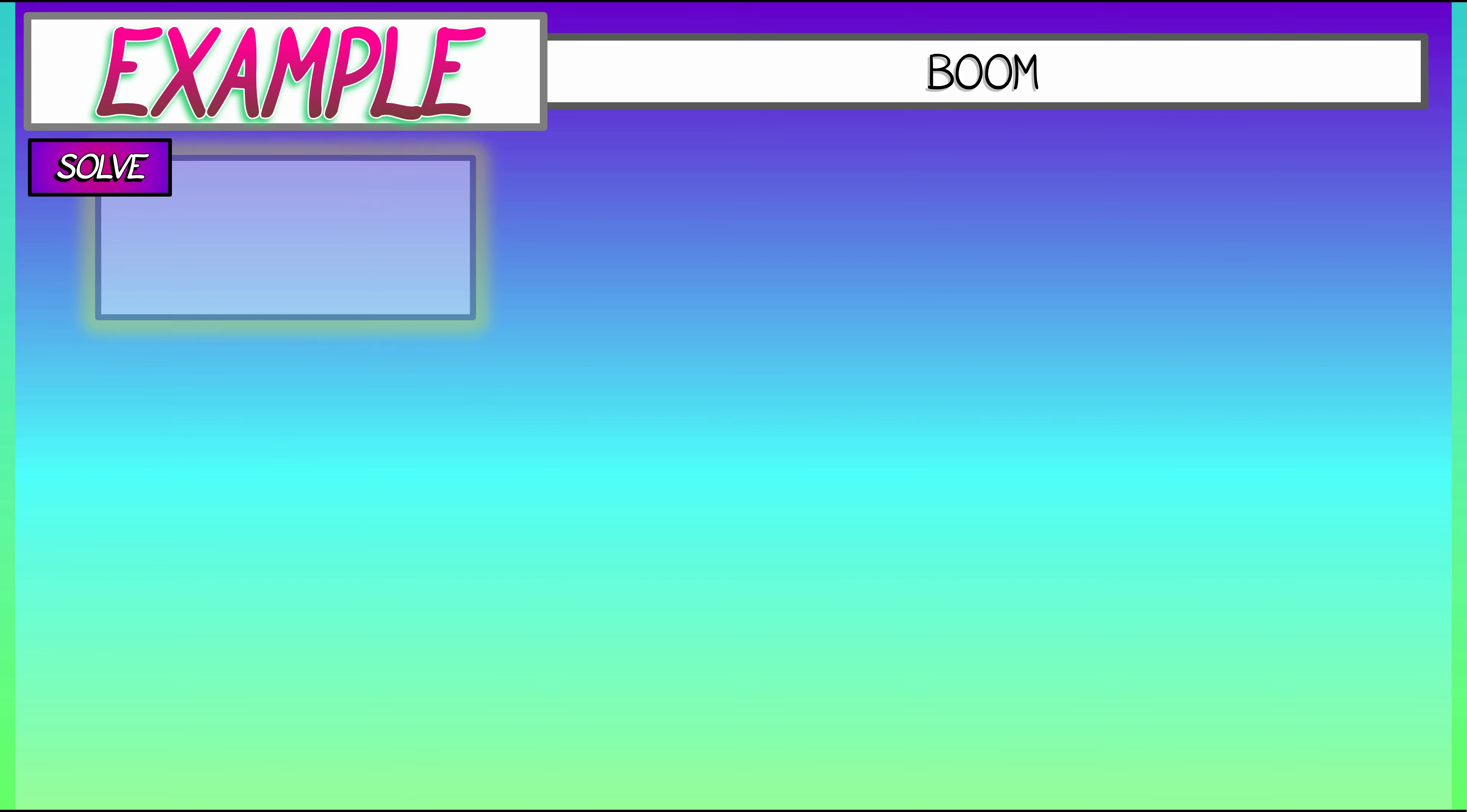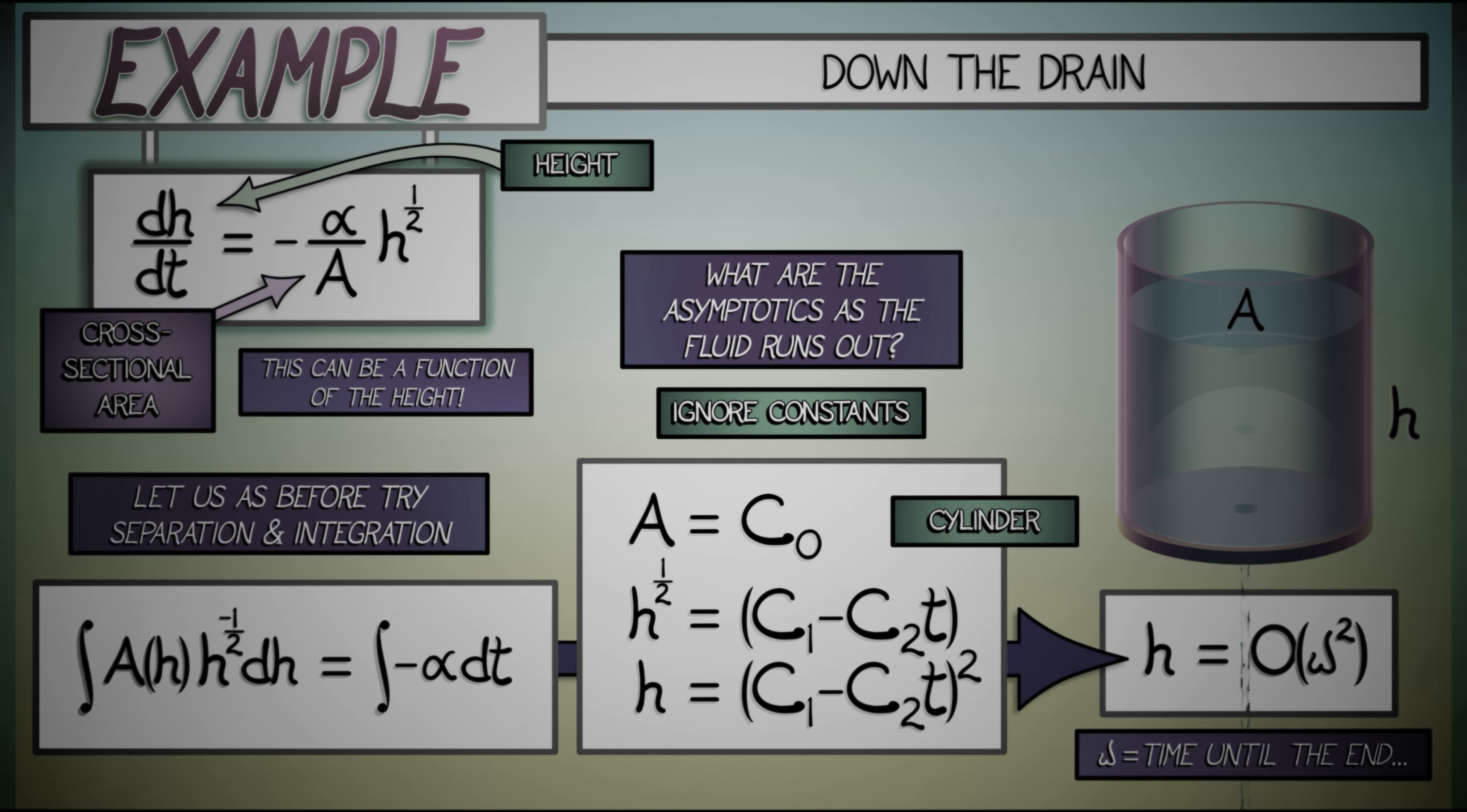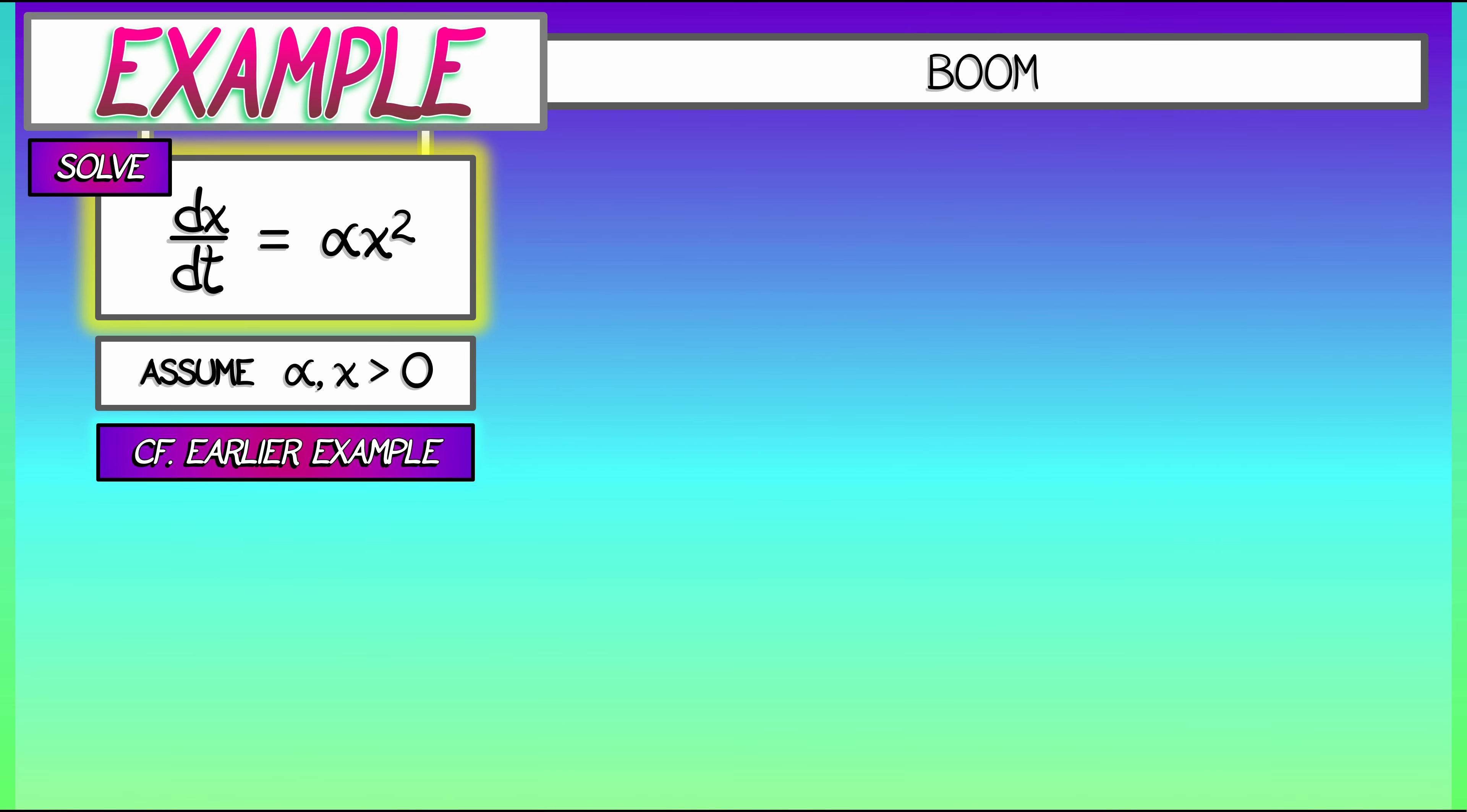Let's see what can go wrong. Consider the following differential equation: dx/dt is proportional to x squared. Let's say that constant of proportionality is alpha. Now for this problem, we're going to assume that both alpha and x are positive. This is different from a previous example that we looked at, but there the power was not two, it was one half, and the constant of proportionality on the front was negative instead of positive.